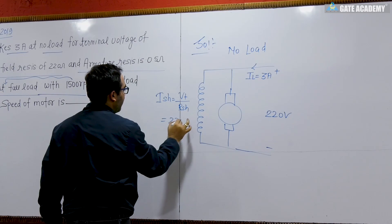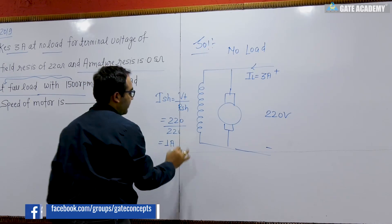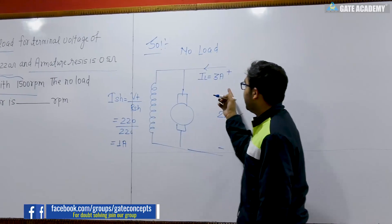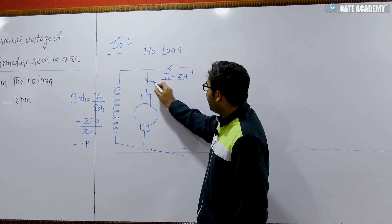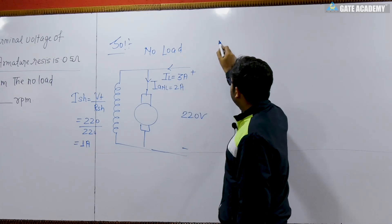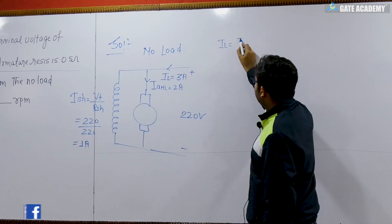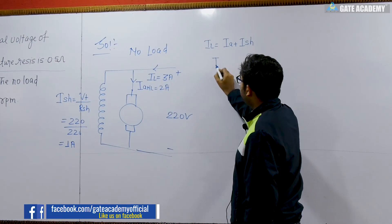So how much? 220 by 220, so this is 1 ampere. Now 3 ampere is taken by the motor, 1 ampere is going in the shunt winding, so it's quite obvious the value of armature current at no load will be equal to 2 ampere. Because for motor, IL equals Ia plus Ish by applying KCL.